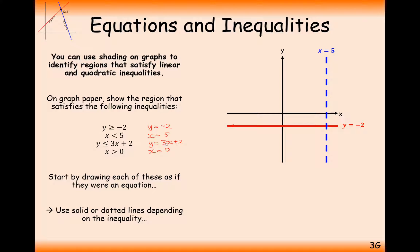The next line is y equals 3x plus 2, which is a bit more tricky. Using y equals mx plus c, we start at 2 and go up at a gradient of 3. For x greater than 0, we draw the line x equals 0, which is effectively the y-axis. We then focus on which parts of the diagram to shade. We need the y-coordinates to be more than minus 2, so anywhere above the red line is satisfying. We want the x-coordinates to be less than 5, so we want the left-hand portion.